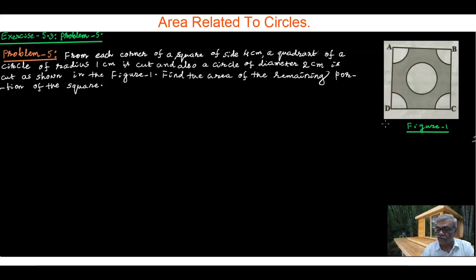that is 4 cm - I can write this as 4 cm. From a square of side 4 cm, a quadrant of a circle of radius 1 cm is cut from each corner, and also a circle of diameter 2 cm is cut.